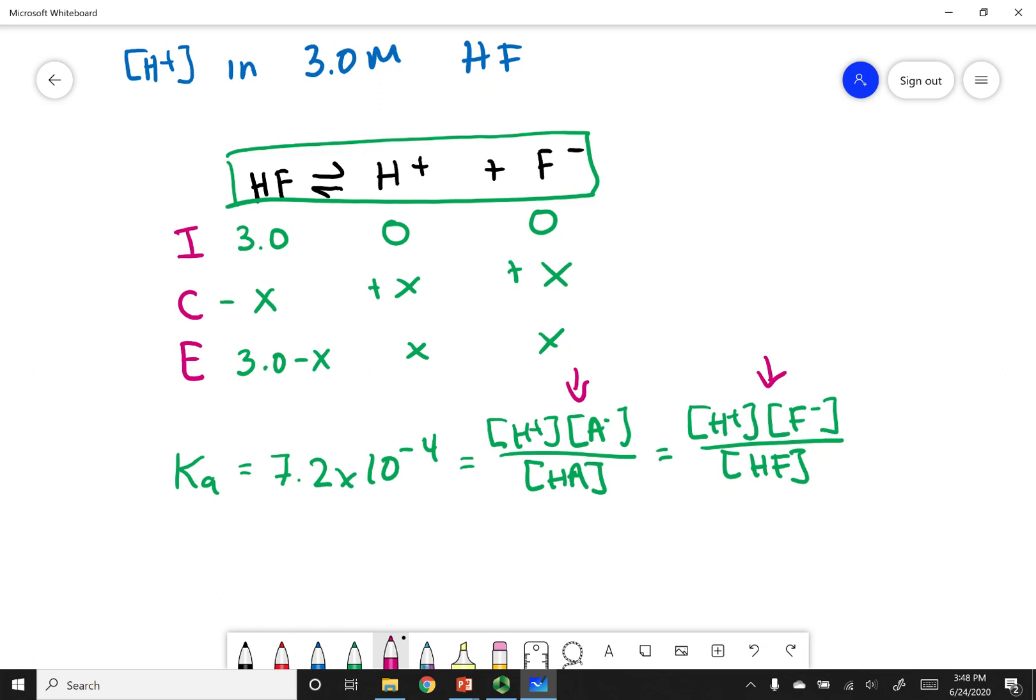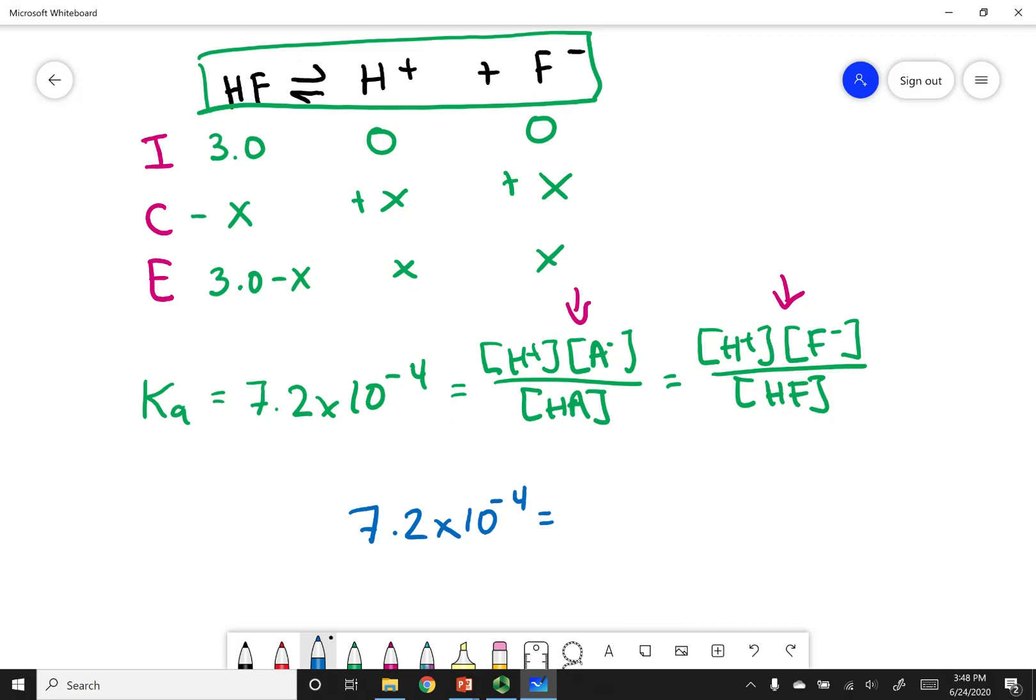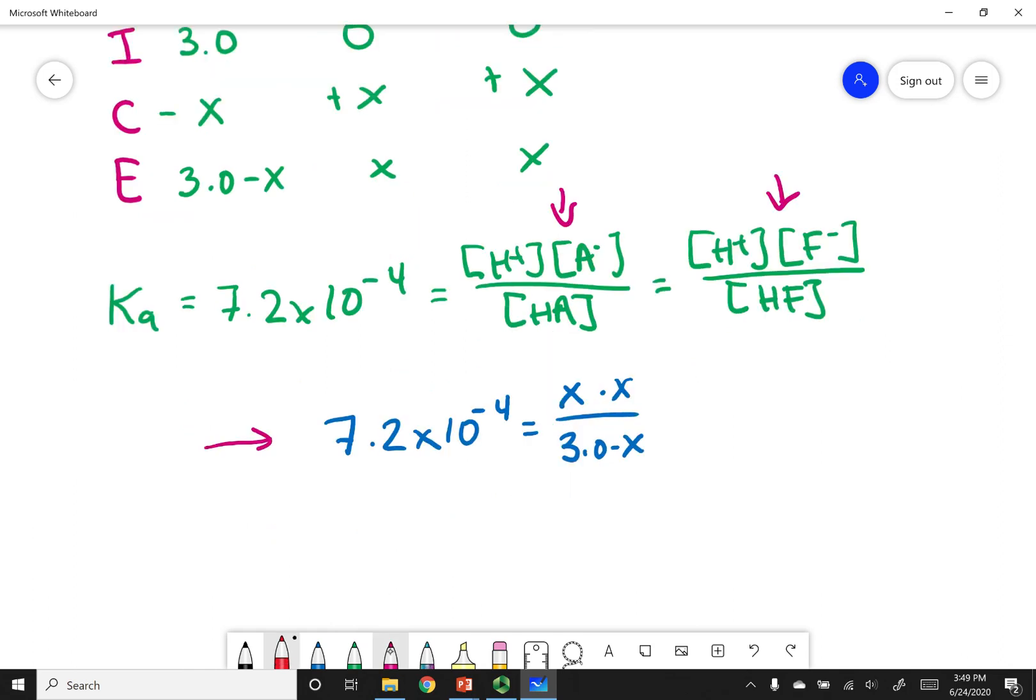Let's start plugging some values in. My Ka is 7.2 times 10 to the negative 4. I'm going to put in my H-plus concentration, which is X. My F-minus concentration, which is X. And then I see 3.0 minus X for my HF concentration. Now one thing I want you to know - look at the value of this Ka. It's really, really tiny. This is going to be true for most weak acids. So I can say that anytime I see a minus X or a plus X, it should be insignificant. So I can disregard that.